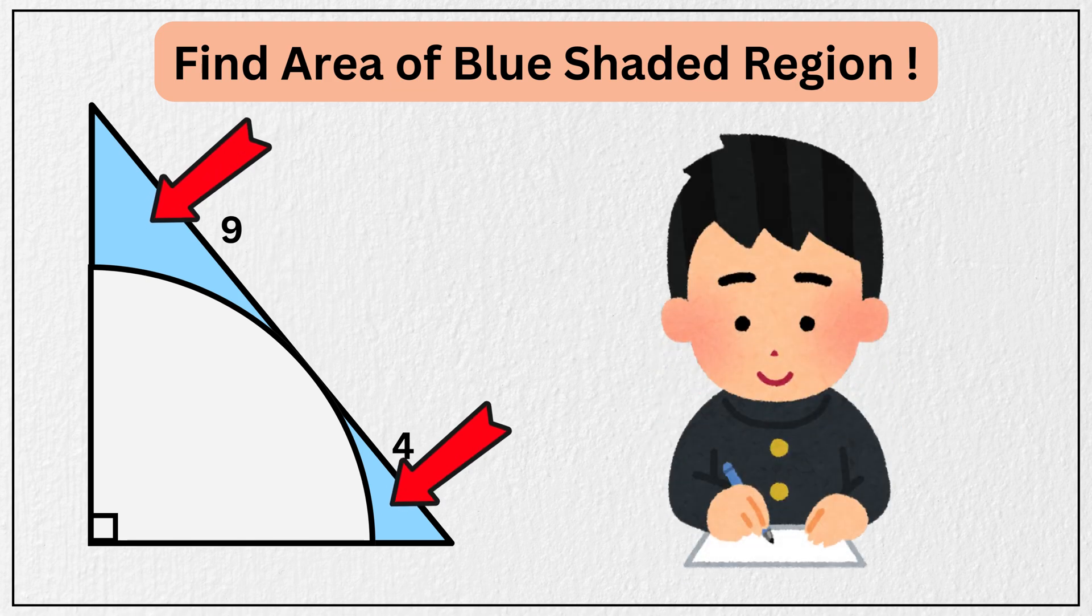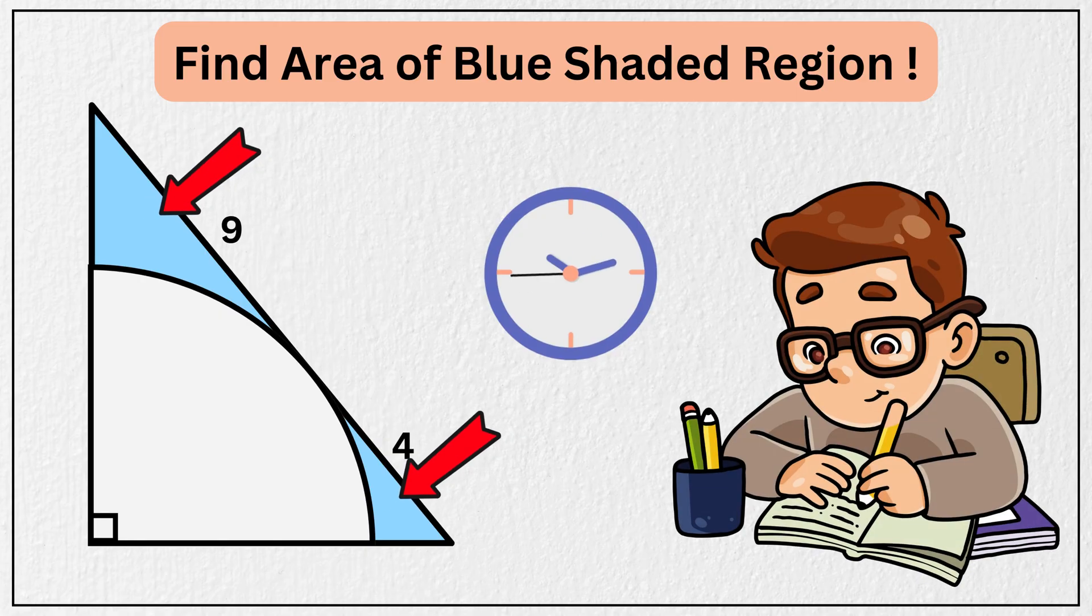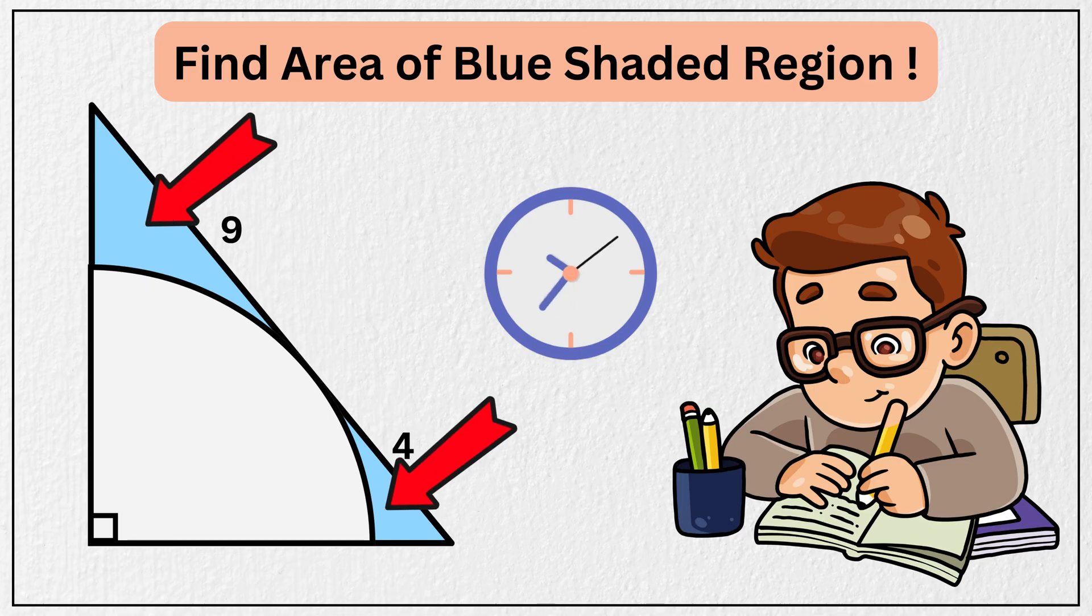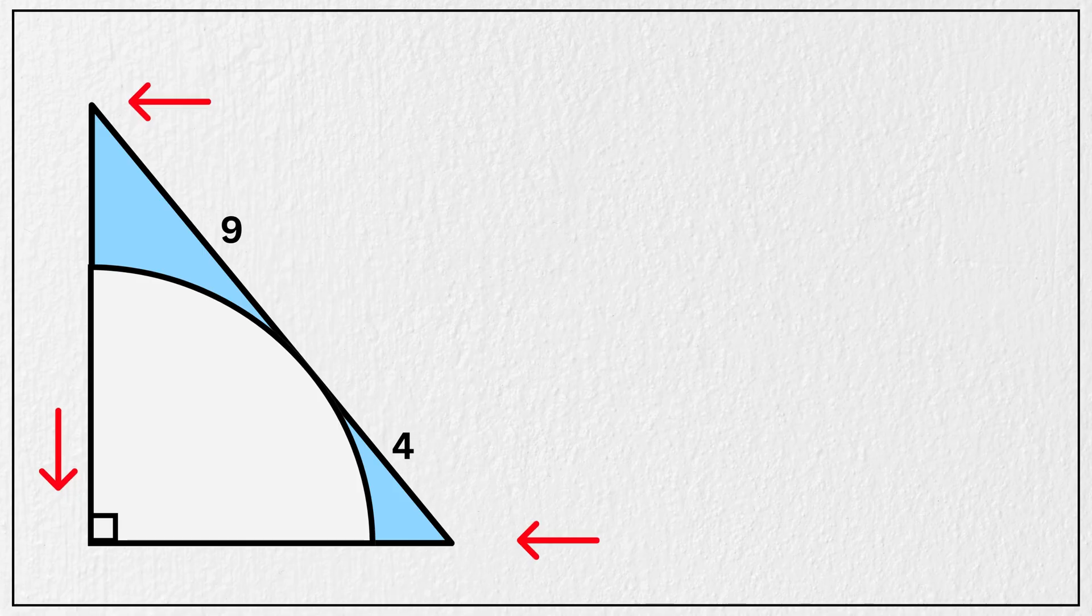And when you are ready, you can always come back to verify your answer. Alright, let us solve it together. But before we begin, let's label the vertices of the triangle as A, B, and C, and the point of tangency on the hypotenuse as D.